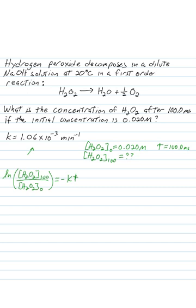So let's plug in what we know. So now we have the natural log of H2O2 at time 100 over concentration of H2O2 times 0, which is 0.020 molar. And that's equal to negative KT, so negative 1.06 times 10 to the minus 3 inverse minutes times 100 minutes.